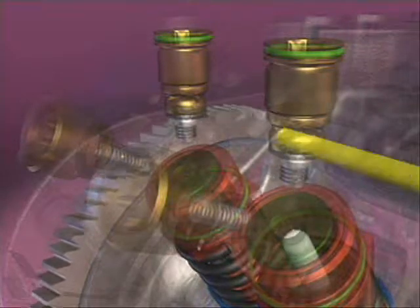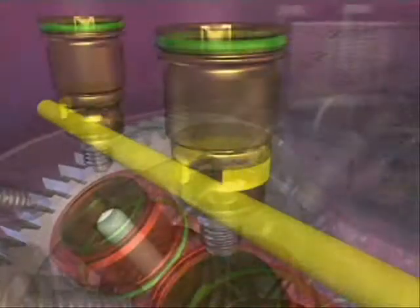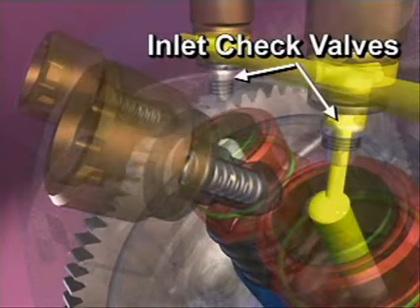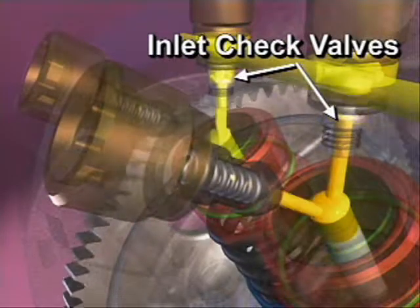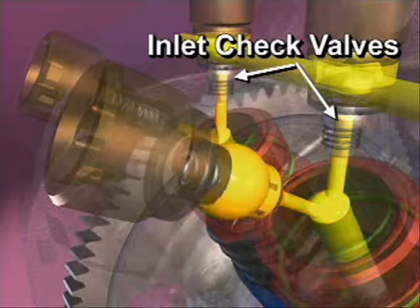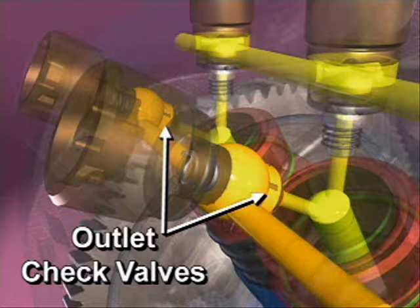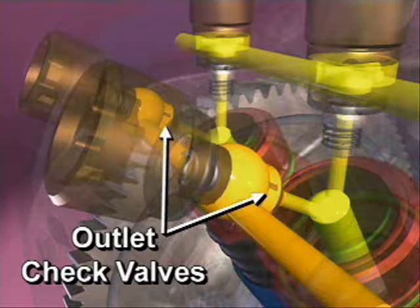Inlet and outlet check valves act to develop and hold fuel rail pressure. The inlet check valve holds fuel inside the pumping chamber so that it may be pressurized. The outlet check valve holds the fuel rail pressure inside the rail so that it does not leak back into the pumping chamber.